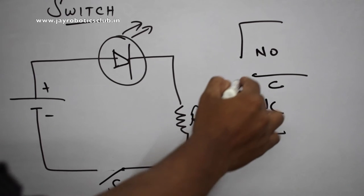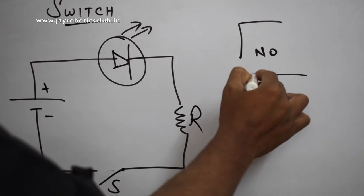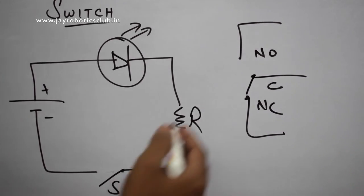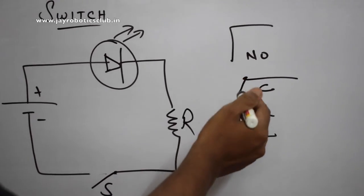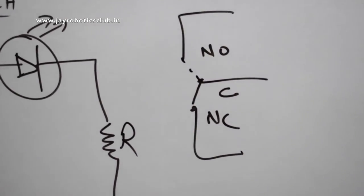If you see the switch, this common terminal will always be connected to this NC. And if you switch on, this C will switch over and it will connect it with NO.